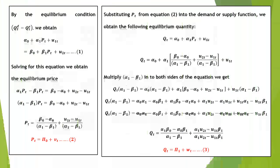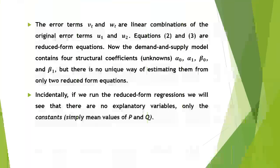How do we obtain these reduced form equations? By the equilibrium condition, equating quantity demanded with quantity supplied: α₀ + α₁pt + u1 = β₀ + β₁pt + u2. Solving, we get the equilibrium price pt = π₀ + vt. Substituting this into either the demand or supply function gives the equilibrium quantity qt = π₁ + wt. The error terms vt and wt are linear combinations of the original error terms u1 and u2. The demand and supply model contains four structural coefficients: α₀, α₁, β₀, and β₁. But there is no unique way of estimating them from only two reduced form coefficients. To estimate four unknowns, we must have four independent equations.